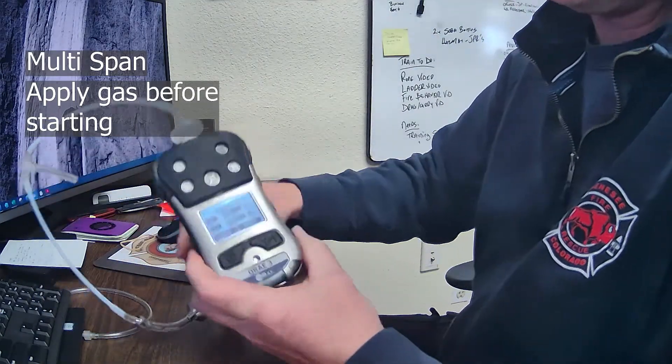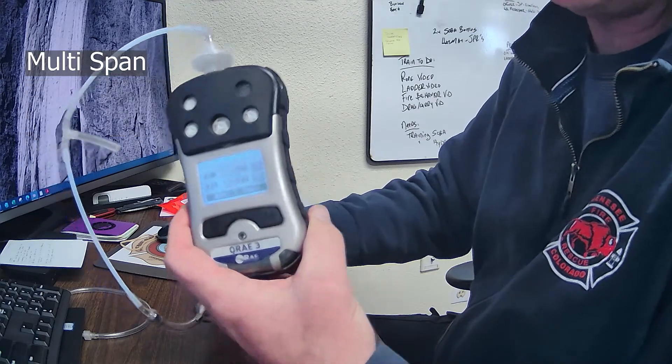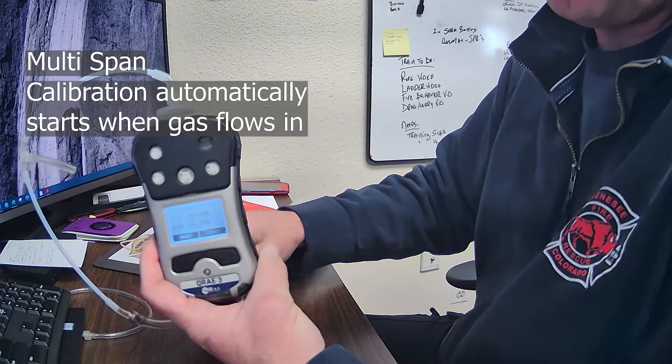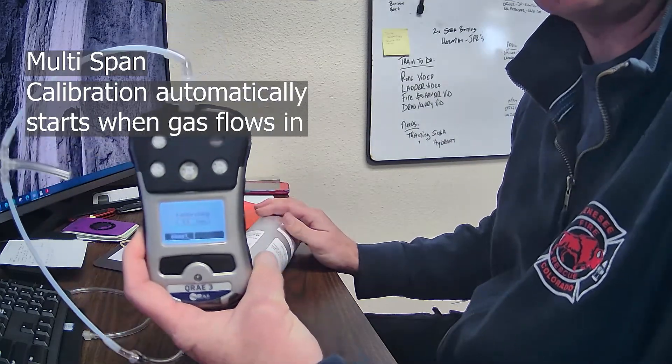I know it doesn't come out of your pocket, but our taxpayers would appreciate just taking the extra step. So, it says apply gas, I put the hose on to the filter, and then you just turn the gas on. That's what I'm doing back here. Open. And it's going to start calibrating. It just recognizes it, and it's going to go for it.